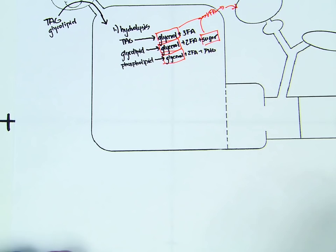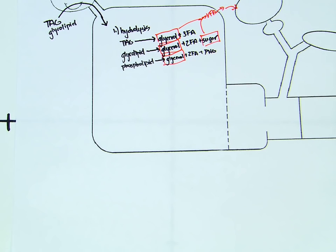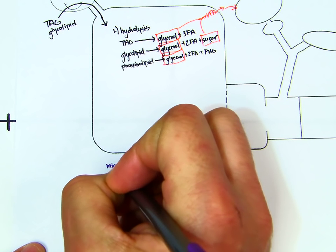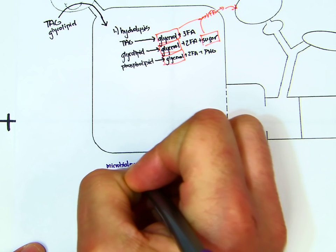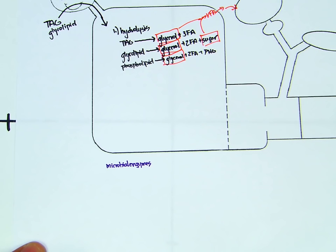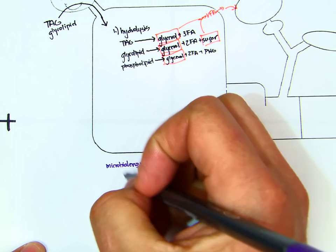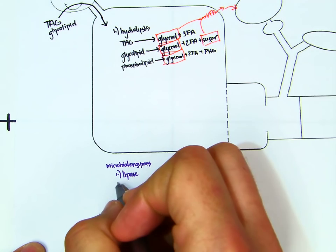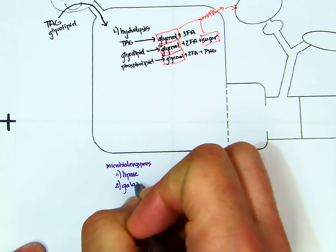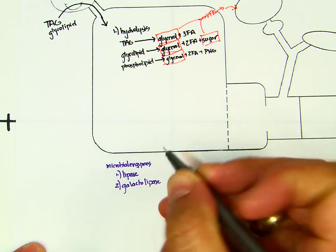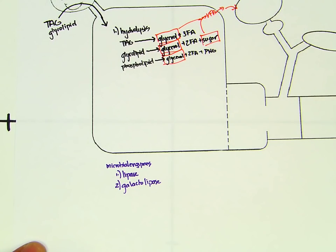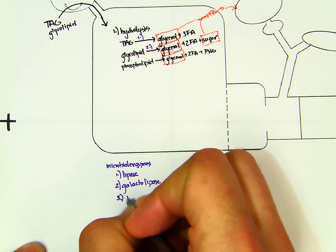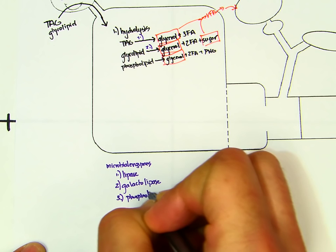Down here we'll write down the microbial enzymes that do the hydrolysis. The first one is lipase, and lipase is going to work on the TAG. The second one is galactolipase, and galactolipase is going to work on the glycolipid. And then third, phospholipase.